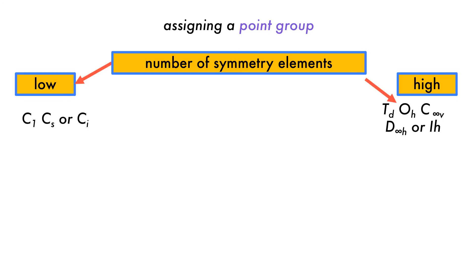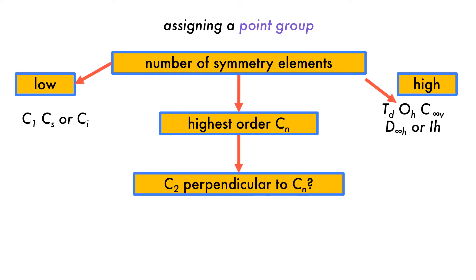Point groups can be assigned based on six questions about the molecule symmetry. First, we ask if the molecule has a high or low number of symmetry elements. If it has neither, then we need to ask what the highest order rotational axis is and take note of this. Following this, we need to determine if there is a C2 axis perpendicular to the principal axis.